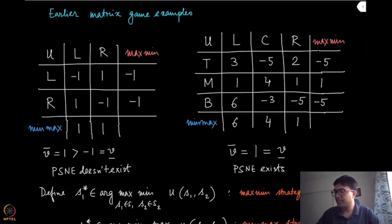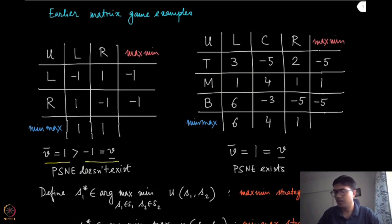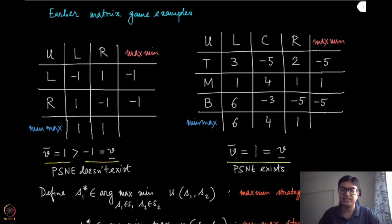In the first case, the penalty shootout game, we had the situation where the minmax value was equal to 1, which was strictly greater than the maxmin value, which was minus 1. These are not equal. But in the other case, the maxmin value and minmax value both were equal to 1, and in that case PSNE existed.